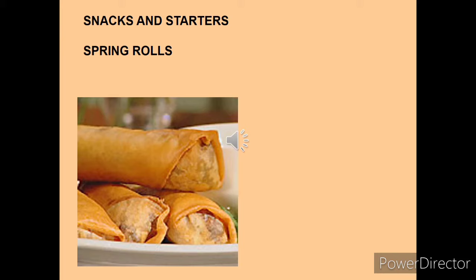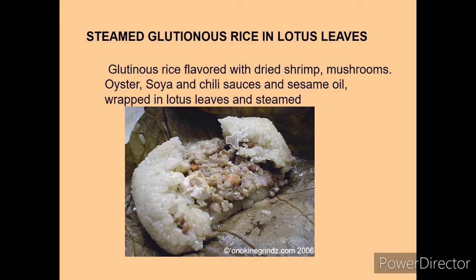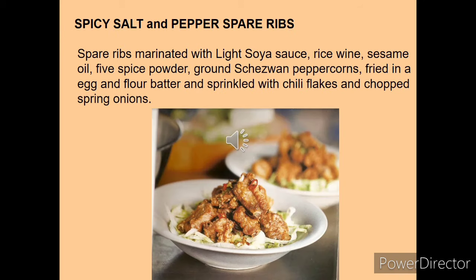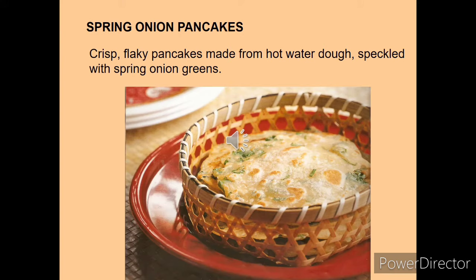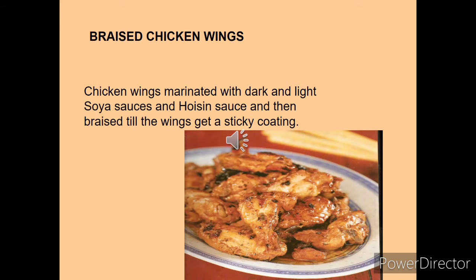Now we will talk about snacks and starters. Spring rolls are very famous — different types of fillings are used, rolled and then deep fried. Steamed glutinous rice in lotus leaf — Chinese people use rice and lotus leaf for making this food, and they are generally steamed. Spicy salt and pepper spare ribs are marinated with different ingredients, sprinkled with chili flakes and spring onions, and then deep fried. Spring onion pancakes are made from hot water dough and sprinkled with spring onion greens — these are part of the cereal menu.